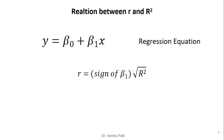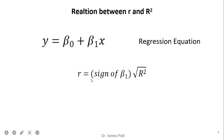Now we will see the relationship between R and R-squared. For simple linear regression with one independent variable — y = β₀ + β₁x — R is equal to the sign of β₁ multiplied by the square root of R-squared. Here β₁ is nothing but the slope, and the slope can be positive or negative, so we can get R values in the range from minus 1 to 1.